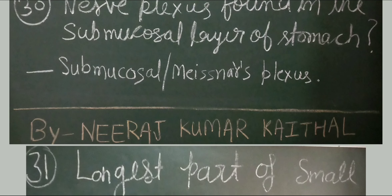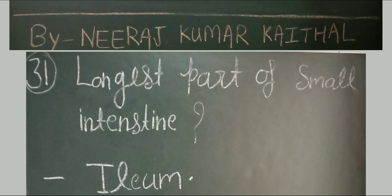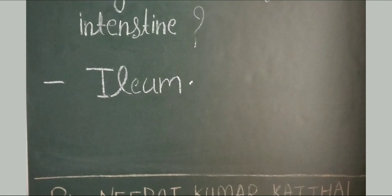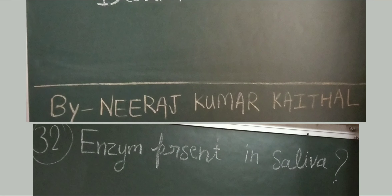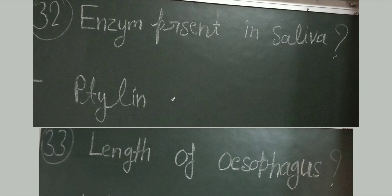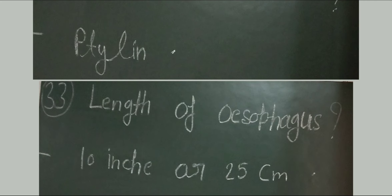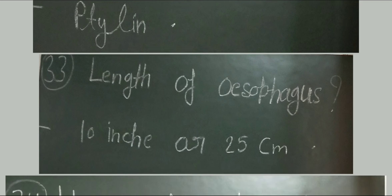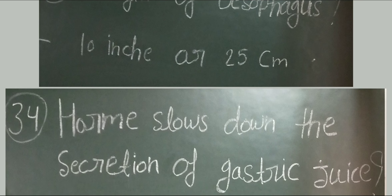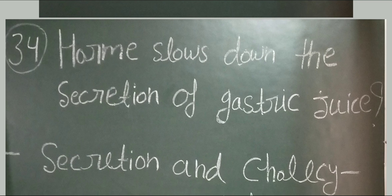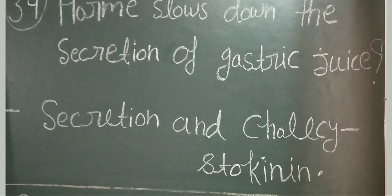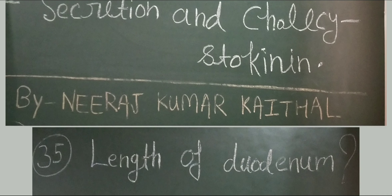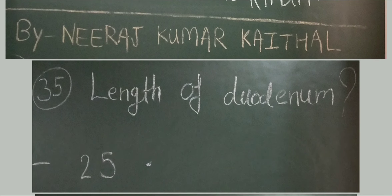Question number 31: longest part of small intestine is the ileum. Next question: enzyme present in saliva is ptyalin. Length of esophagus: approximately 10 inches or 25 centimeters. Hormones that slow down the secretion of gastric juice: secretin and cholecystokinin. Question number 35: length of duodenum — approximately 25 centimeters.